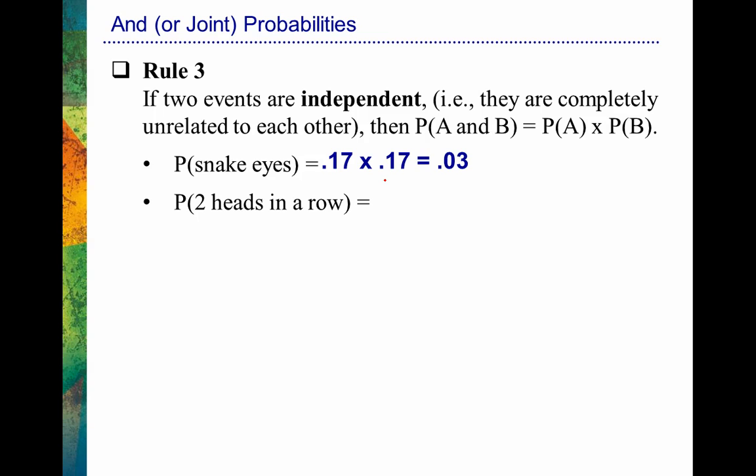What's the probability of finding two heads in a row? Remember, each time we flip a coin, the probability is 0.5 that it comes out heads or tails. When I flip a coin, it has no memory, so each flip is completely independent. That means I can figure out the probability of flipping a coin heads and then flipping another heads: 0.5 times 0.5 equals 0.25. We figured that out previously, and now we're using another method based on rule number three.